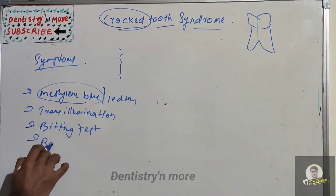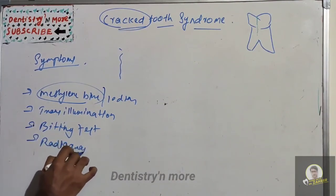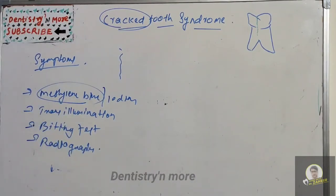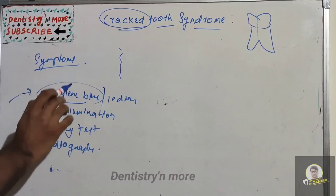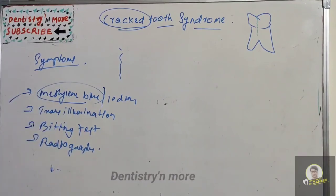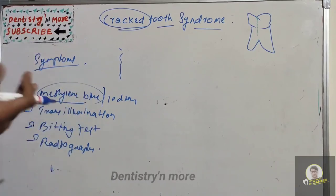A biting test with cotton, a rubber wheel, or a tooth slooth can also be performed. Radiographs can clearly highlight a radiopaque line. The full diagnostic process involves: history taking, visual examination, tactile examination, bite test, periodontal probing, staining or trans-illumination, radiographs, removal of existing restoration, and if needed, surgical assessment by raising a flap to directly visualize the problem within the bone.